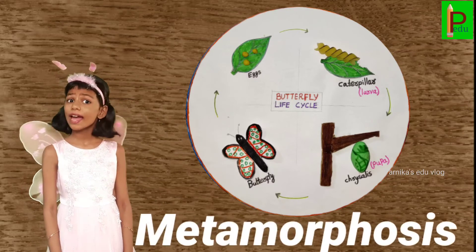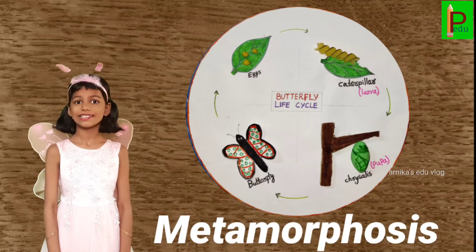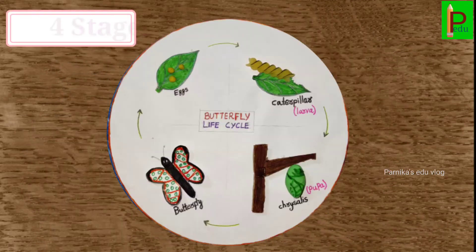It's called metamorphosis. There are four stages in the life cycle of a butterfly.